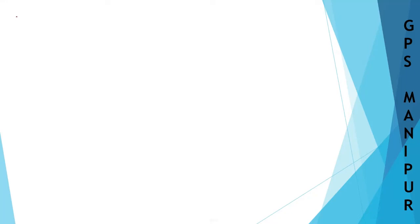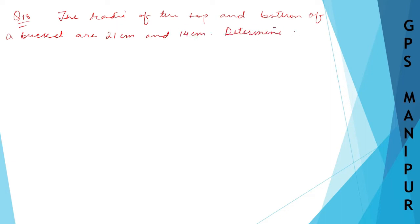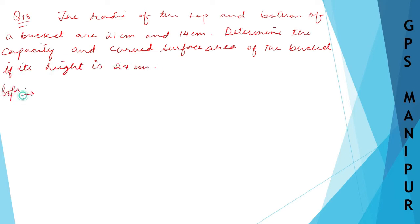We are doing exercise 2.3, question number 18. The question says there is a bucket — let's say this is the bucket. Sorry for the diagram, I cannot make it very properly, so pardon me for that. This is the radii, so let us name the top and bottom radii.